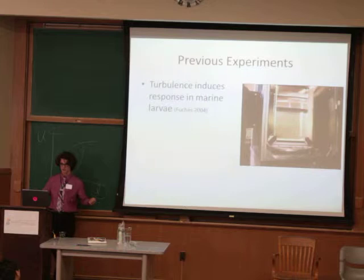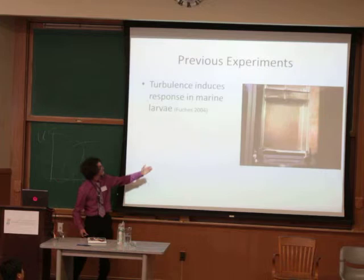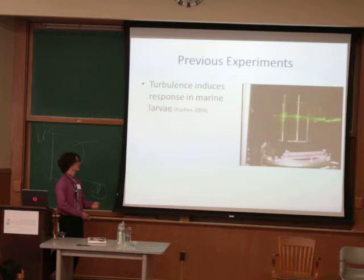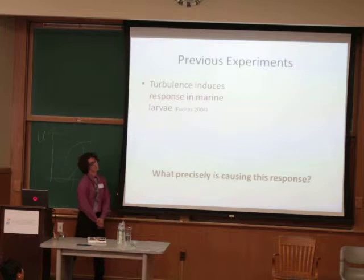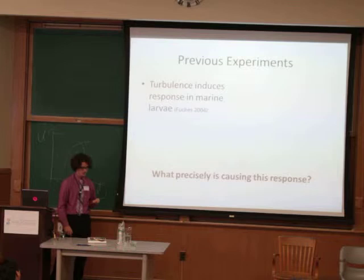Previous experiments have already cemented the importance of turbulence in larval ecology. In particular, a study put larvae in a tank that stirs up the water, then tested how many larvae actually settle. What they found is that the more turbulent the flow, the more settlement — meaning larvae are using turbulence as cues for settlement. But we're interested in what precise portion of turbulence is causing this response, because turbulence is very random with eddies at all length scales. What exactly are the larvae responding to?